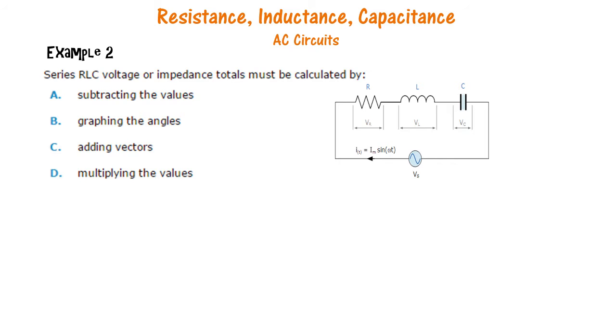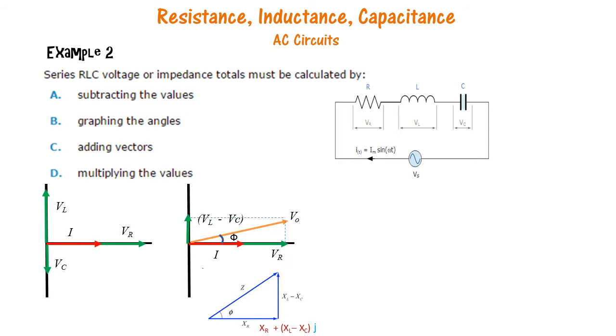So we draw the phasor diagram for a series RLC circuit and here we use I as the reference as that is common in the circuit. And we know that we find the resultant voltage by adding the vectors VL minus VC and VR. So the correct answer would be by adding the vectors.